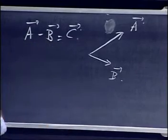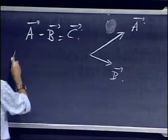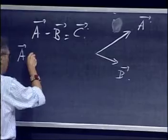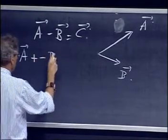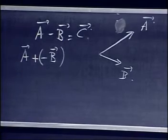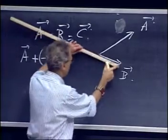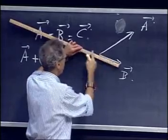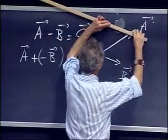One way to look at this is the following. You can say A minus B is A plus minus B. And we know how to add vectors, and we know what minus B is. Minus B is the same vector, but flipped over. So we put here minus B.